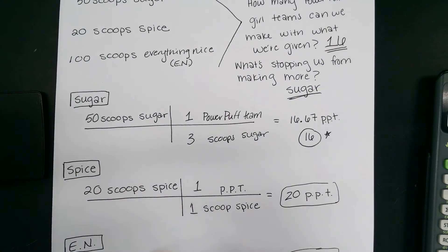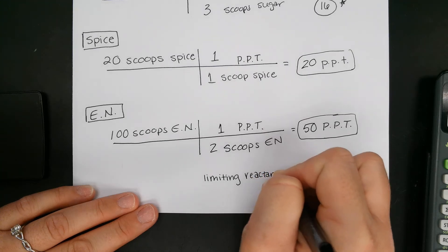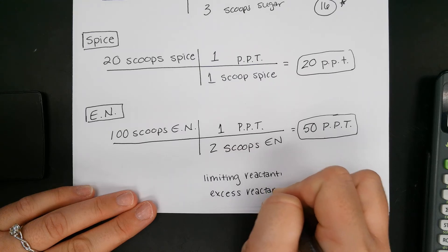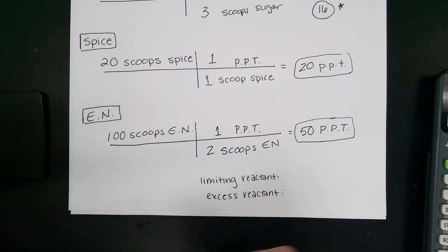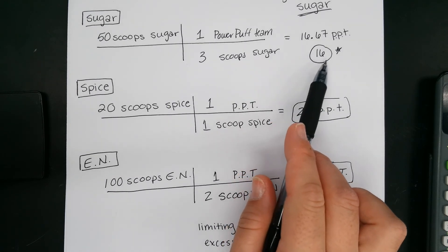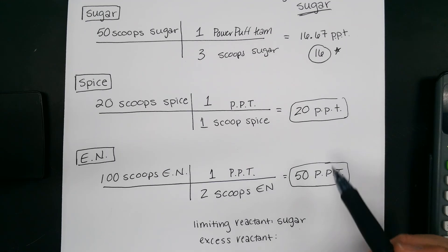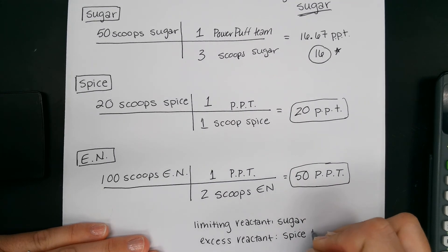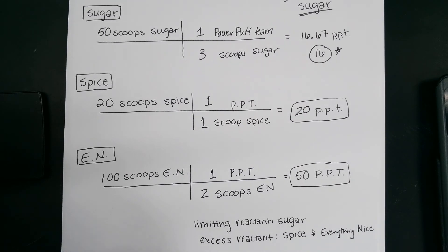In chemistry, we're going to have what's called a limiting reactant and an excess reactant. The limiting reactant is what stopped us from making more. The excess reactant is what we have plenty of. Sugar created the fewest teams, so sugar is our limiting reactant — it stopped us from making any more. For this example, we have two excess reactants: spice and everything nice. There are a few more questions you'll be asked, but we'll save those for when we get to the chemistry side.